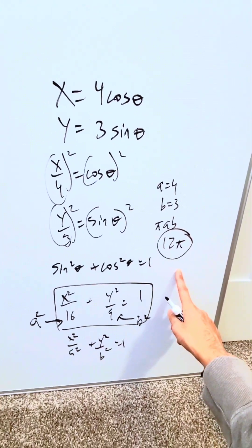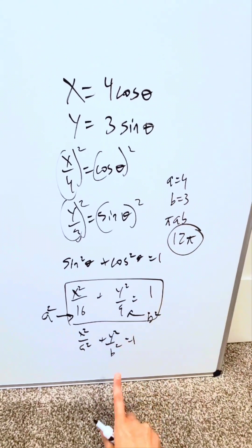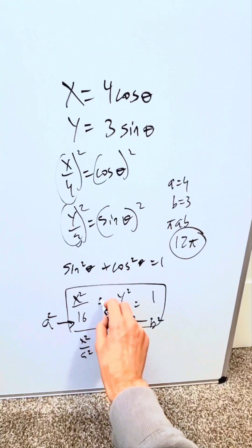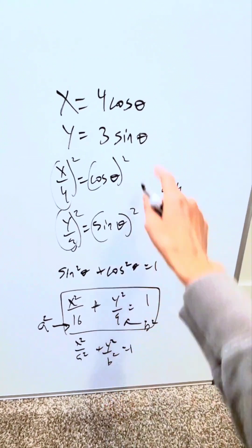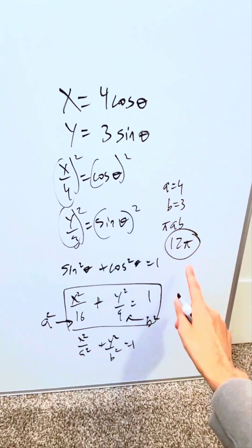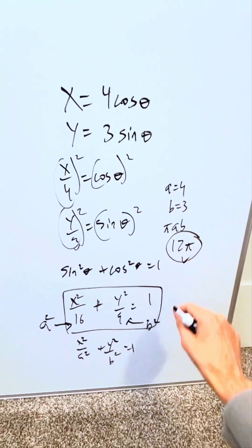That represents the area of a polygon, which happens to be a horizontally oriented ellipse centered around the origin, represented by these two parametric equations. This answer, 12 pi, is correct.